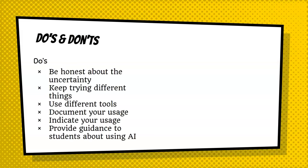Some do's and don'ts to consider. Do's: be honest about the uncertainty — we're still figuring a lot of this out, and it's not valuable to pretend otherwise. Leadership sometimes means being uncertain. Keep trying different things and different tools — don't think that using it once or twice means you've seen all there is to see. Keep track of how you're using it, and indicate it — not just with students but with colleagues and friends. And provide guidance to students about using it, born out of your institutional policy and out of conversations with students about how they're seeing and using it.